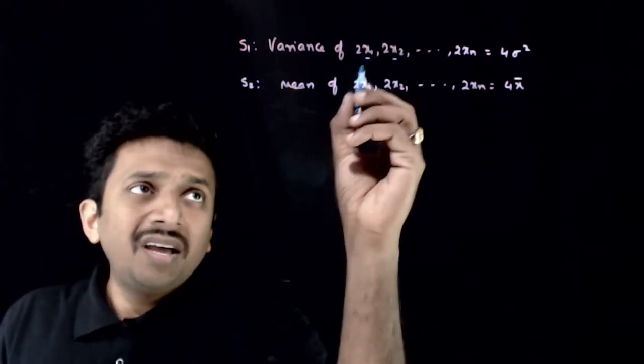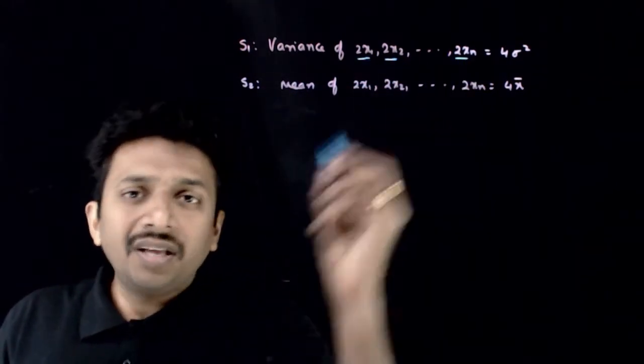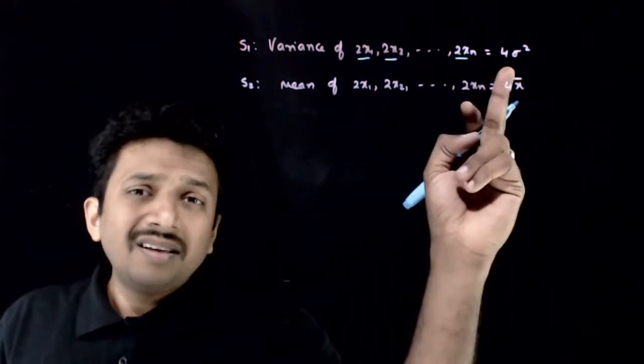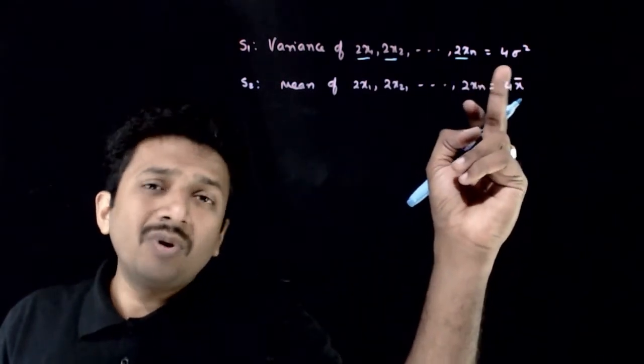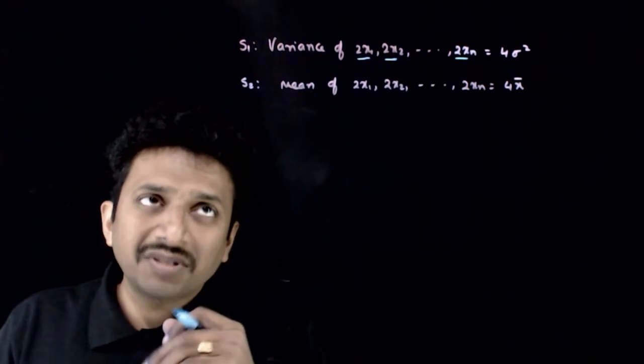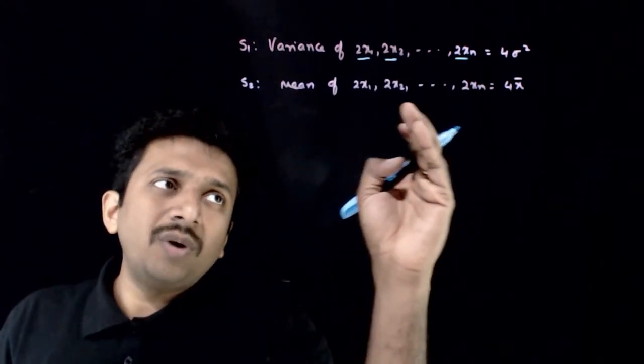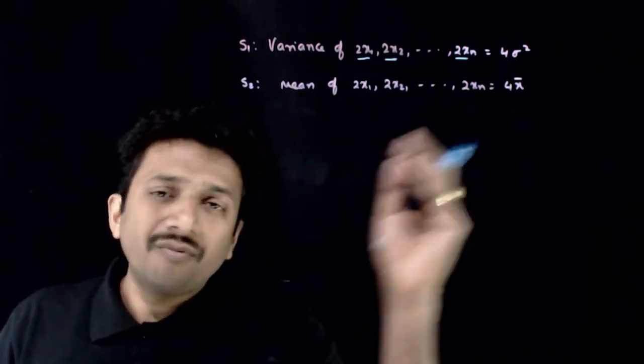The first statement is: if you multiply each reading by 2, the variance becomes 4σ² (that is, 4 times). The second statement is: the mean of 2x1, 2x2, 2x3 up to 2xn is 4x̄.